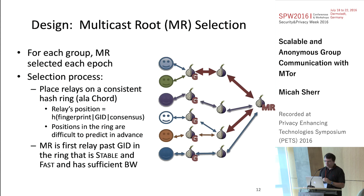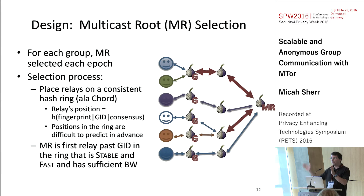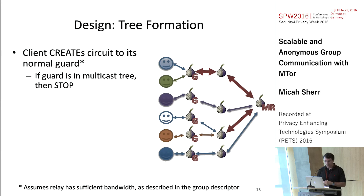The multicast route is selected using a consistent hashing-based mechanism. We take relays, their fingerprints, and place them on a ring — their position based on fingerprints, the GID, and consensus. This prevents a trivial attack where an adversary games its position ahead of time on the ring. The multicast route is the first relay past the GID in consistent hashing space that is stable, fast, and has sufficient bandwidth. All clients can agree on this, bootstrapping toward the existing consensus mechanism.